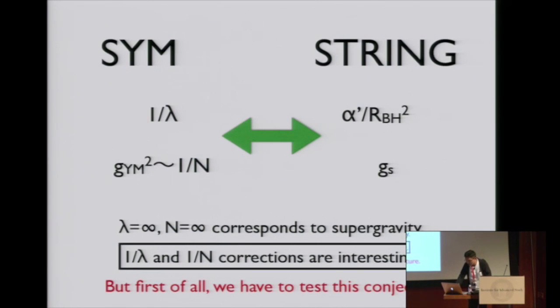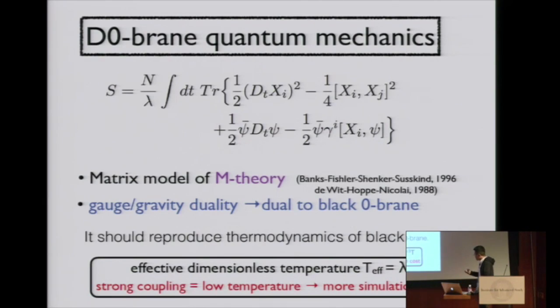First of all, we have to test this conjecture. The action of D0-brane quantum mechanics is simply this one. Xi, this i runs from 1 to 9, so there are 9 scalar fields. The potential term is commutator squared, and we have fermions. This is simply the dimensional reduction of 10 dimensional N=1 or 4 dimensional N=4. Originally, this model was proposed as a matrix model of M-theory by Banks, Fischler, Shenker, Susskind.